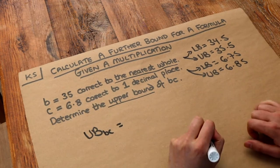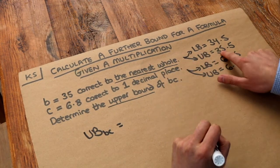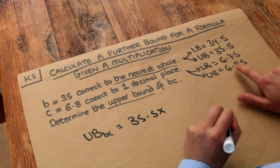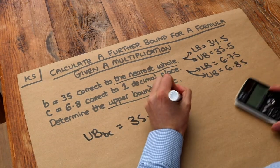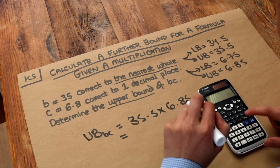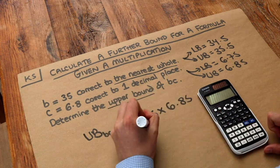is going to be the upper bound of B, so 35.5, multiplied by 6.85, the upper bound of C, and we get 243.175.